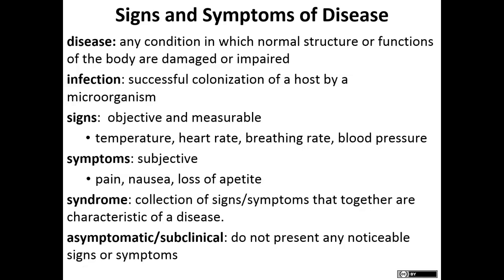Whereas symptoms are things that you might feel that we can't measure — pain or nausea. We might ask you on a scale of 1 to 10 what your pain is, but we can't see it; it's something that you feel. A syndrome is a collection of signs and symptoms characteristic of the same disease. Asymptomatic or subclinical means the infection or disease doesn't present any signs or symptoms, which can be very problematic.